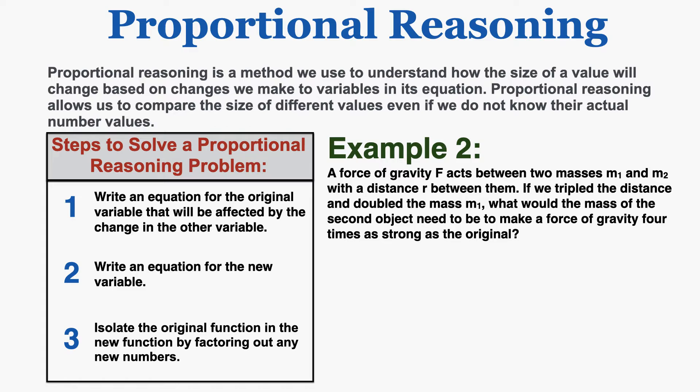Step one: write an equation for the original variable affected by the change. The equation for the force of gravity between two objects is f equals G times m1 times m2 over r squared. Because I'm trying to understand how the second mass will change, I'll rearrange this equation to get m2 by itself, calling it m2o for the original mass 2. The original m2 equals the original force of gravity times r squared, divided by G times m1.